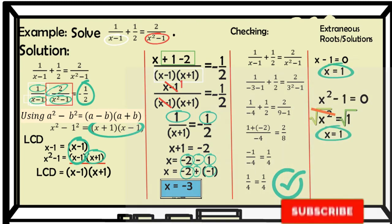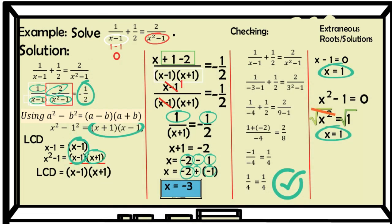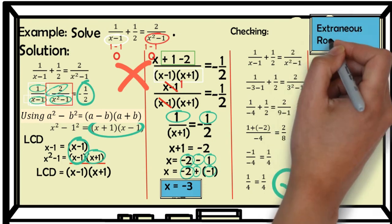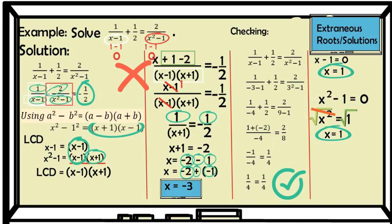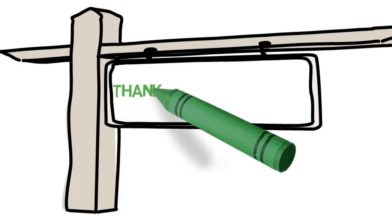To verify: substitute x equals 1 into the original equation. In the first denominator, 1 minus 1 equals 0; in the second, 1 minus 1 equals 0 as well. We cannot divide a number by 0 — that is undefined, a math error. So the only valid solution is x equals negative 3, and the extraneous root or solution is positive 1. Thank you for watching.